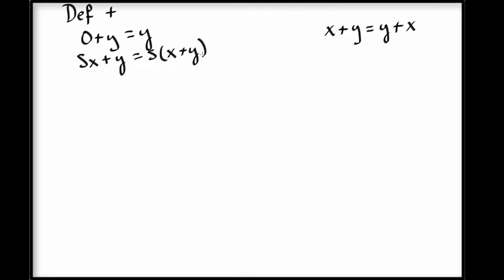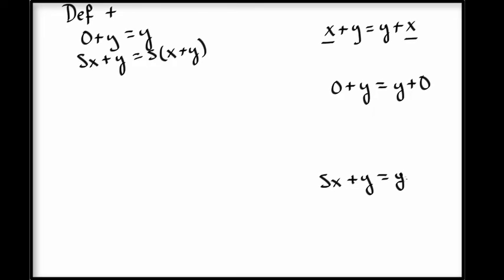We're going to prove commutativity of addition by induction on x. So that means we'll have two cases. We'll have to prove 0 plus y equals y plus 0. And then we'll need to prove that the successor of x plus y is y plus the successor of x. In this second case we'll have an induction hypothesis, which says that for x we already know commutativity: x plus y equals y plus x.